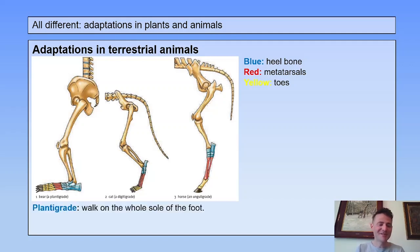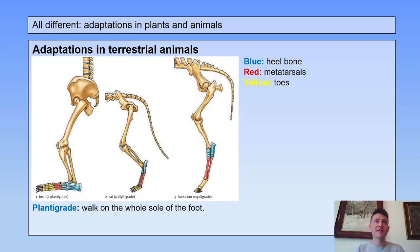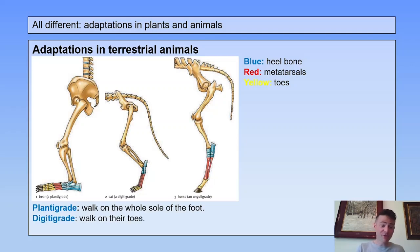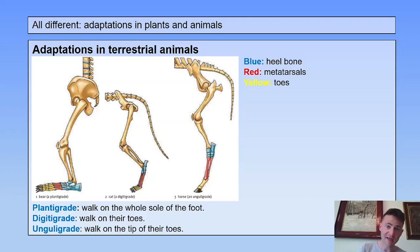Plantigrades walk on the whole sole of the foot — humans are plantigrades as well. Plantigrades are adapted to soil that is a little bit soft; walking on the whole sole of the foot prevents you from sinking into the soil too much. Then you have digitigrades, which walk on their toes. Unguligrades walk on the tip of their toes, and this is a special adaptation for hard soils.